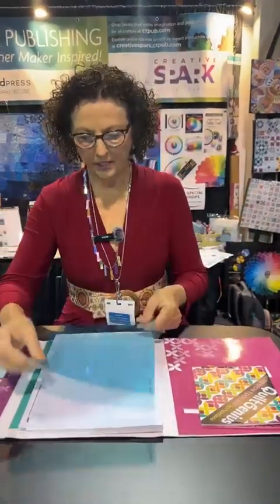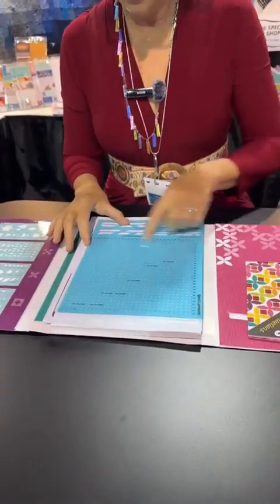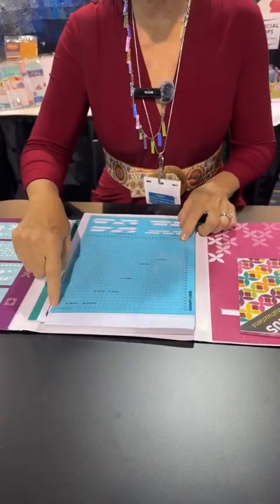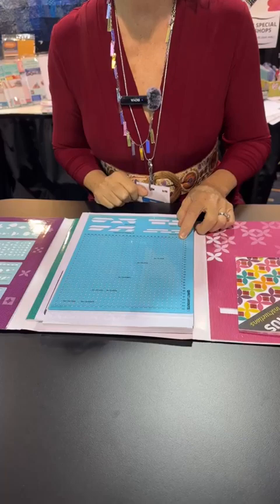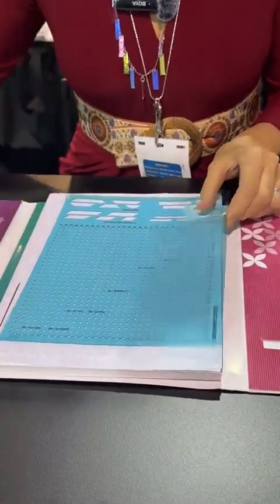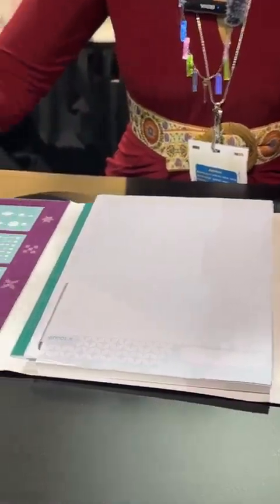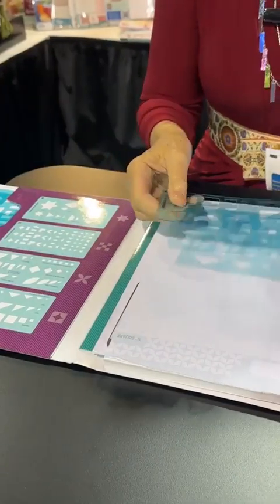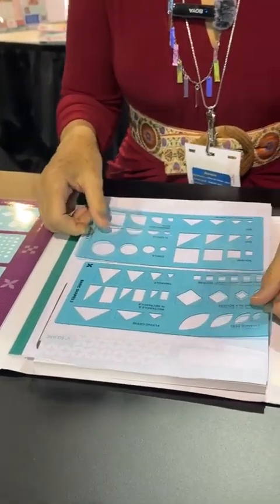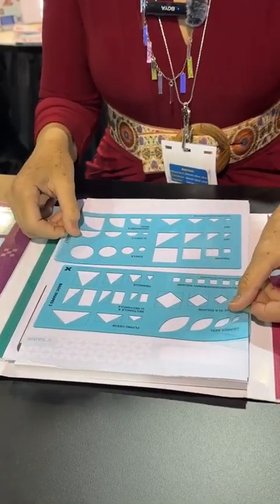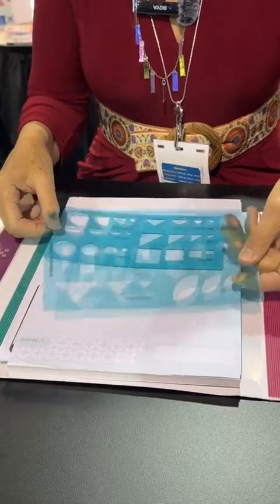So we have five templates in here and the first template you lay it down and you've got the quilt layout and you mark from baby to king size what your quilt is going to be and then you take out your stencils and you start drawing. So let me show you a couple things that make this really interesting and fun.